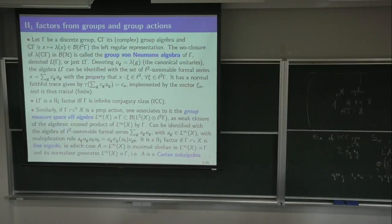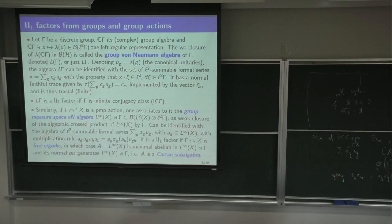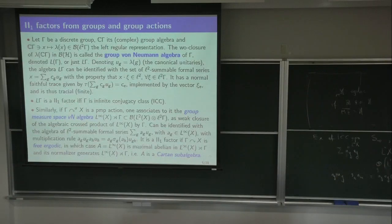A typical example is the diagonal subalgebra D in the hyperfinite II₁ factor R — that's another example of a Cartan subalgebra. I'll give a formal definition of that a bit later. There are more operations: first of all, tensor products — we basically already discussed that. Even if you take infinite tensor products, it's just the algebra in B of the infinite tensor product of Hilbert spaces.